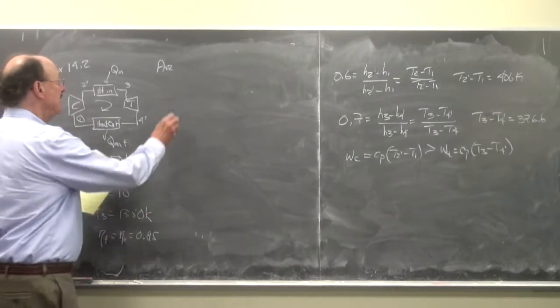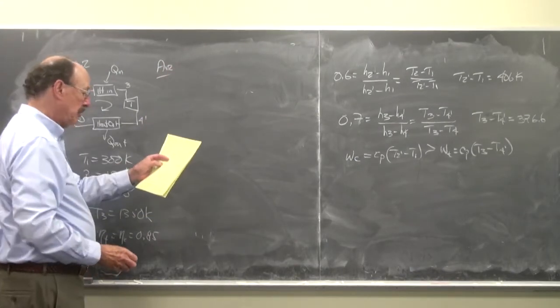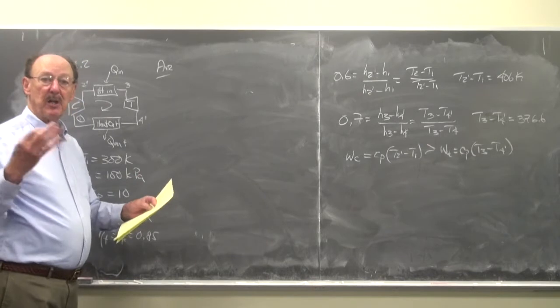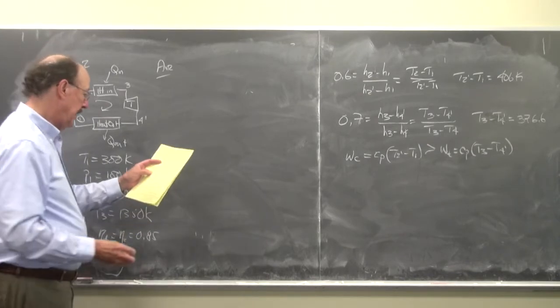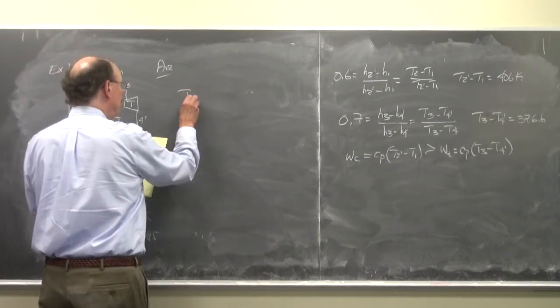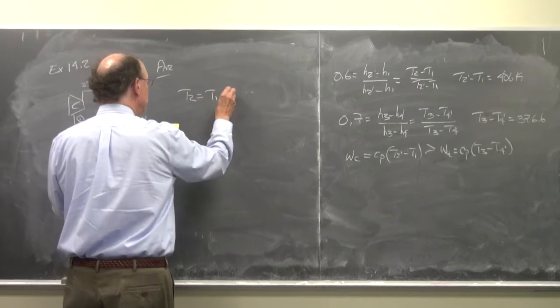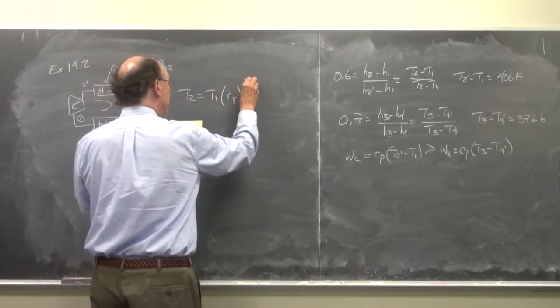We're going to assume that it's air circulating there and now we're going to work our way through the cycle. So we have p2 is equal to T1 times r sub p to the k minus 1 over k.